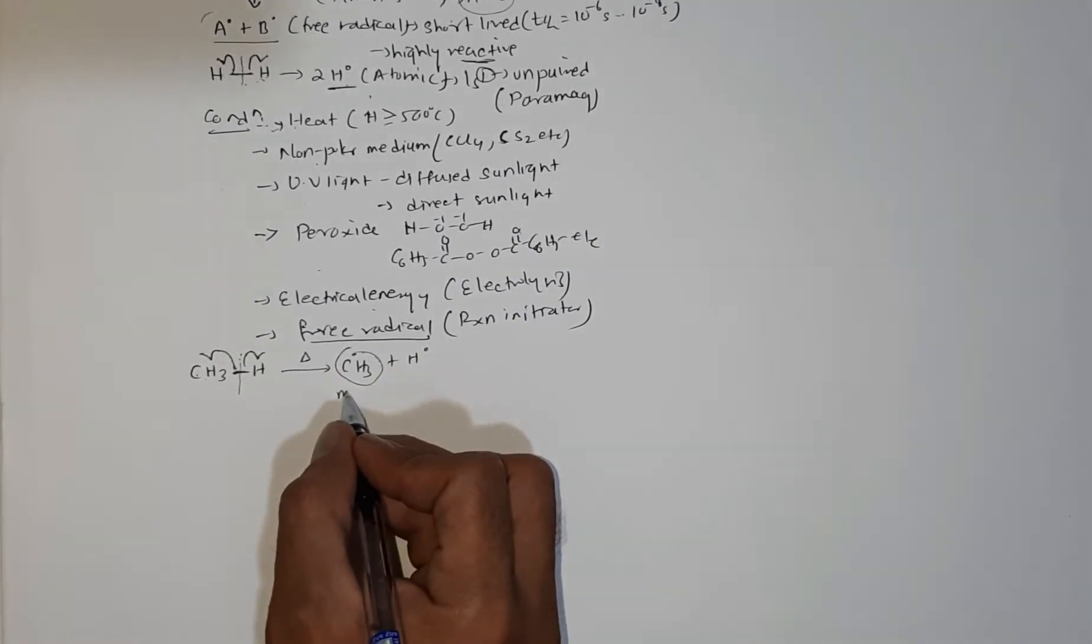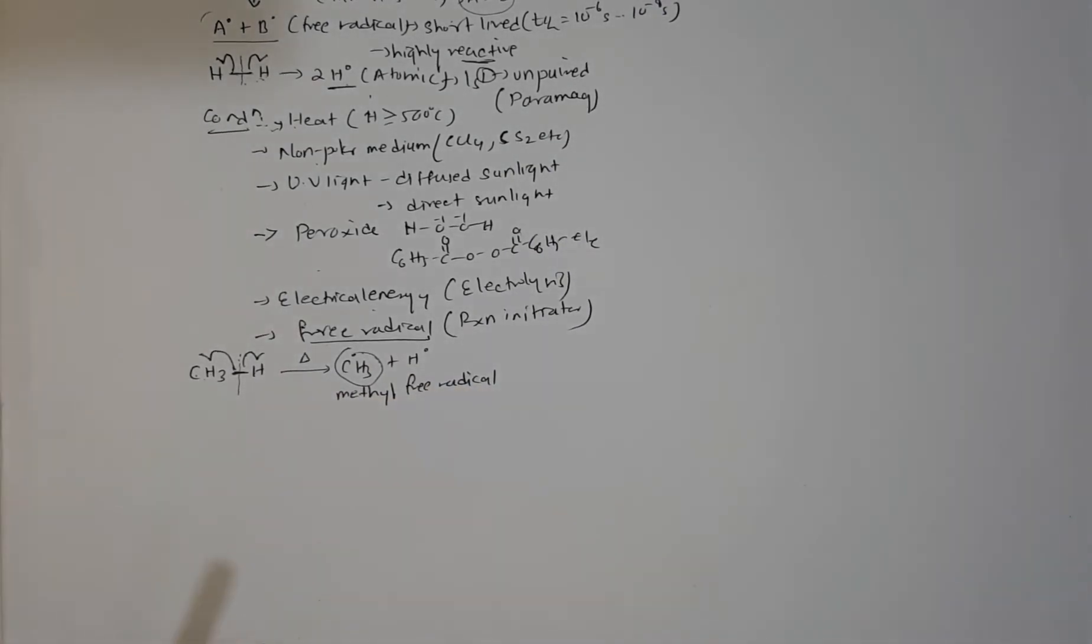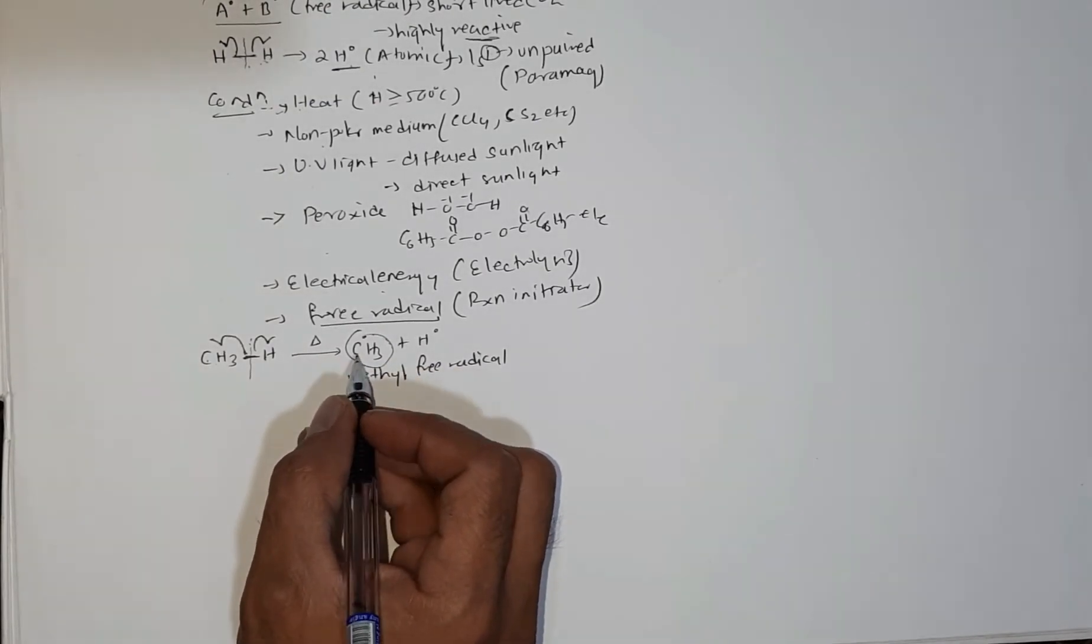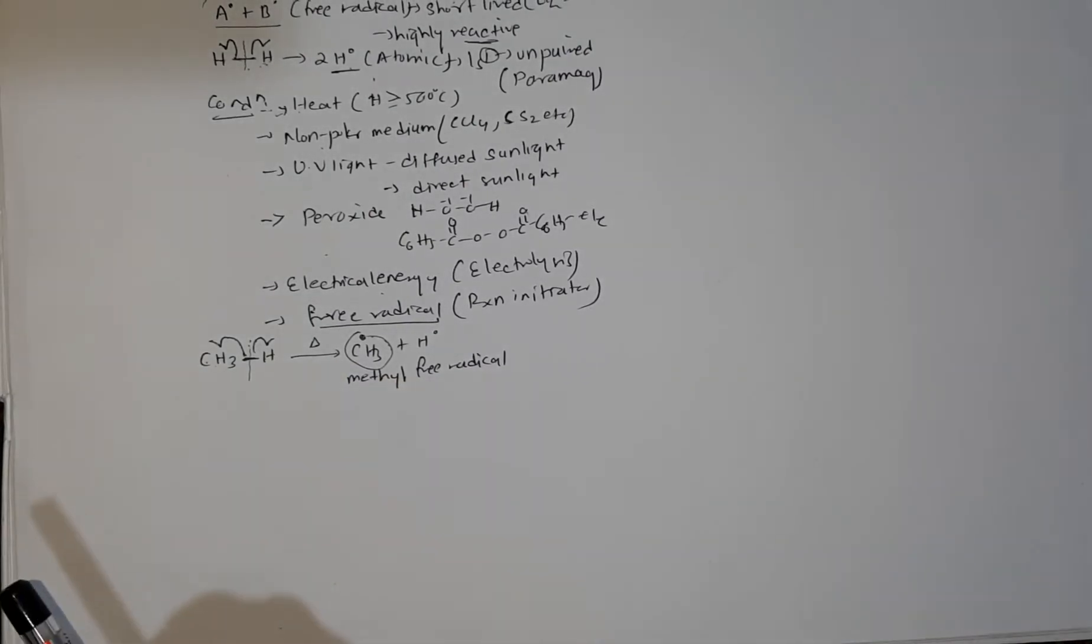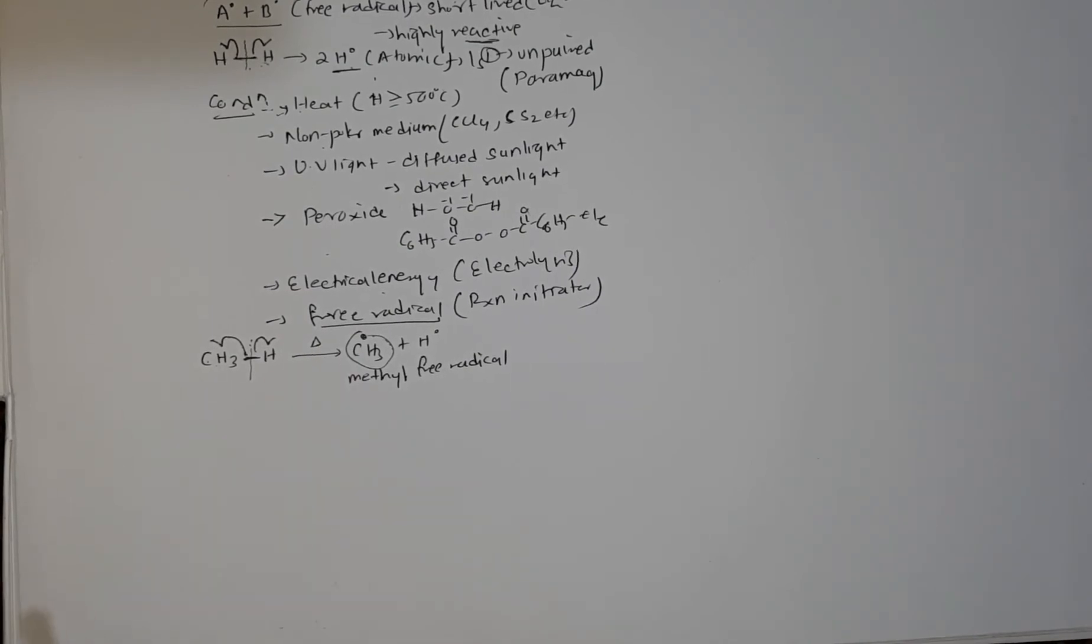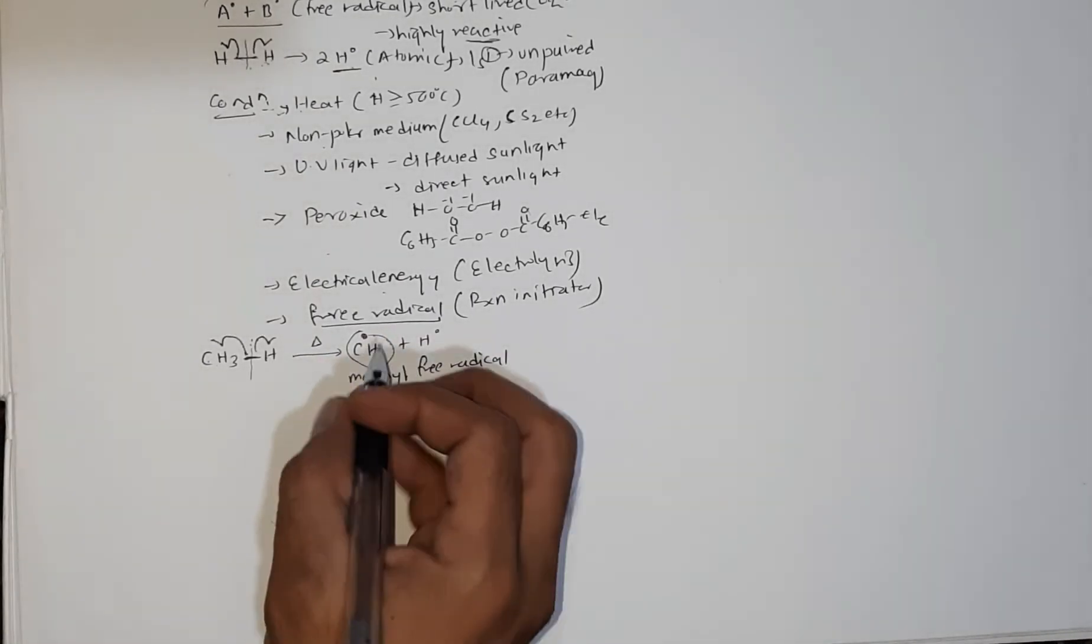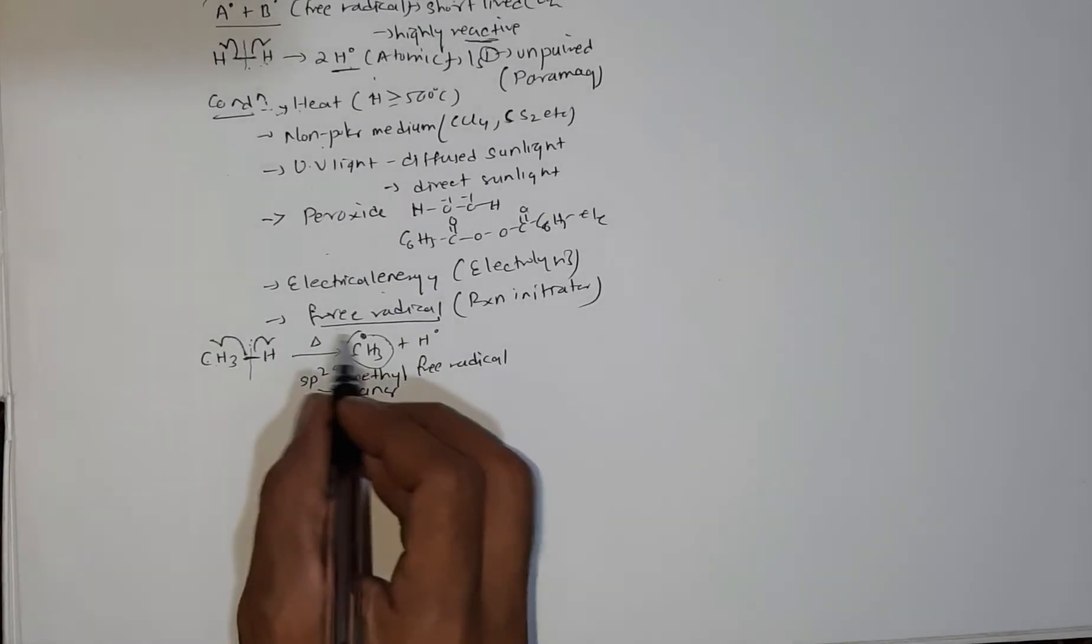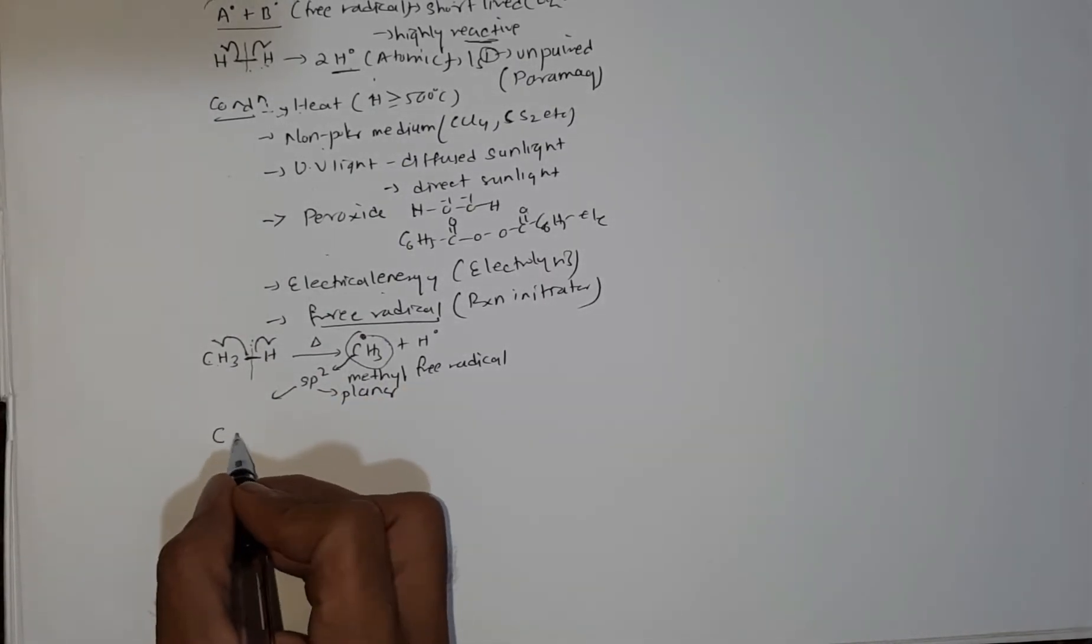This forms CH3 free radical. This free radical is called methyl free radical. In case of this methyl free radical, this carbon atom is surrounded by three hydrogens and one odd electron. The carbon atom is sp2 hybridized and planar in nature.